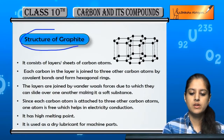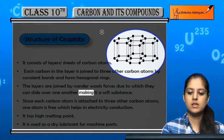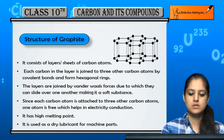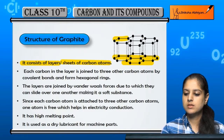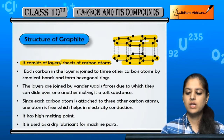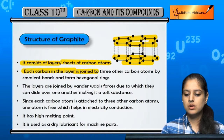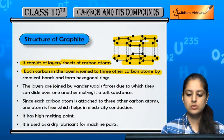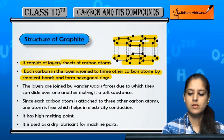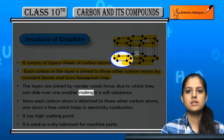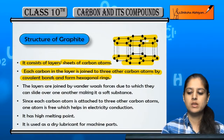Now, the structure of graphite. Graphite looks like this — there are layers and sheets of carbon atoms. These black points represent the carbon atoms. In each layer, each carbon atom is attached to three other carbon atoms by covalent bonds, forming hexagonal rings. These six-sided hexagonal rings are formed by the carbon atoms within each layer.